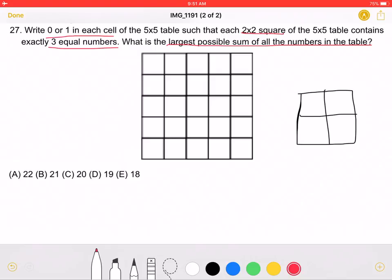In order to achieve the largest possible sum, the 3 equal numbers should be 1s. So, over here, a sample 2x2 square,